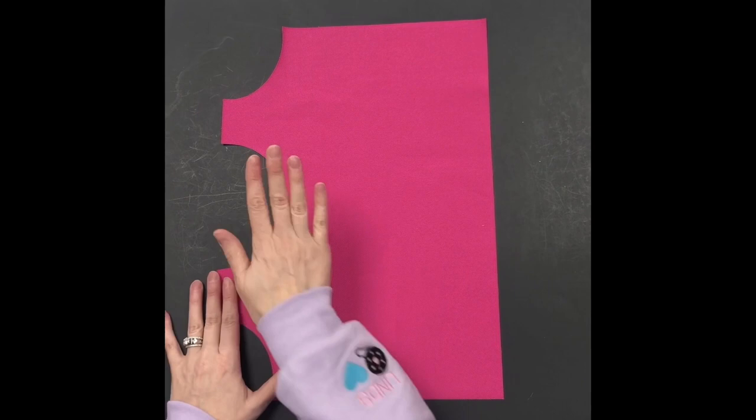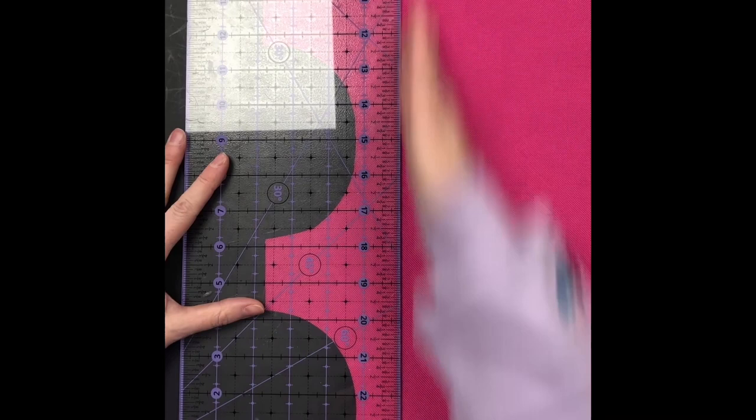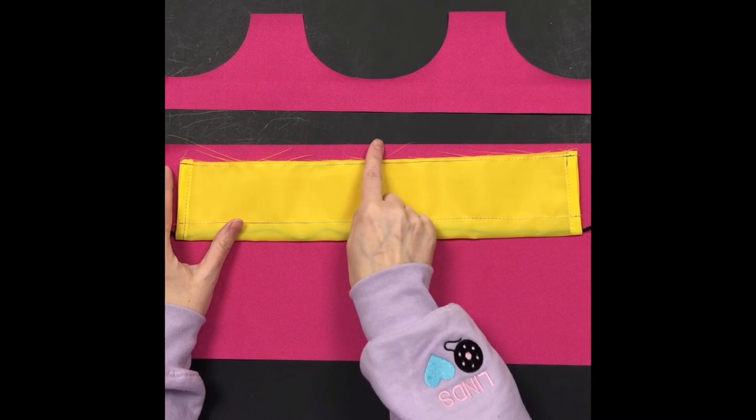So what you're going to want to do though is we're going to turn it on its side and from the shortest point here which is the curved portion, we're going to measure one and a quarter inches down and cut it into two pieces. So my one and a quarter mark is right at that bottom part of the rounded circle. Now we're ready to add our drawstring portion.